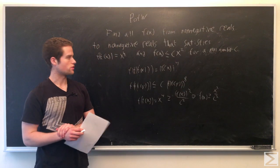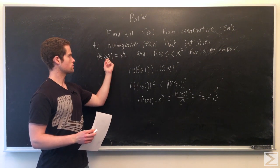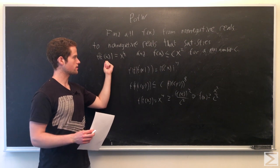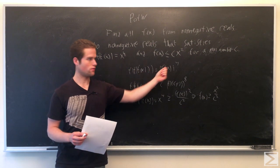So first, a couple things to note, taking f of f of x equals x to the 4th instead of x, place f of x there, we get f of f of f of x equals f of x to the 4th.